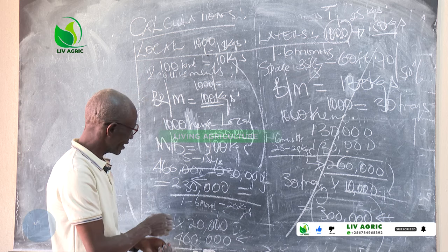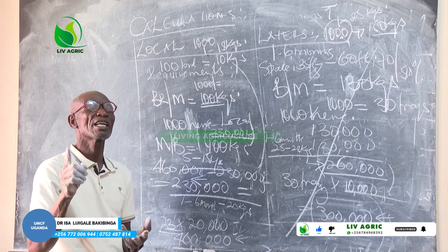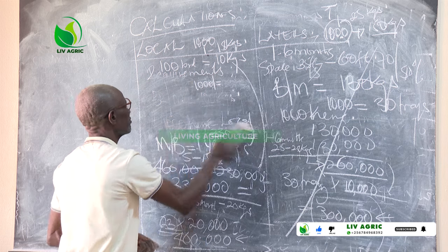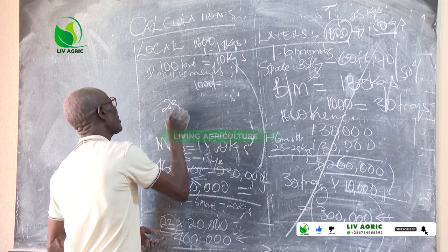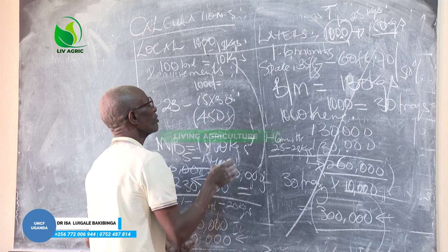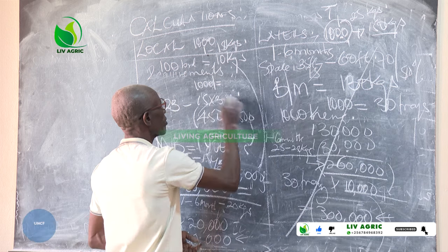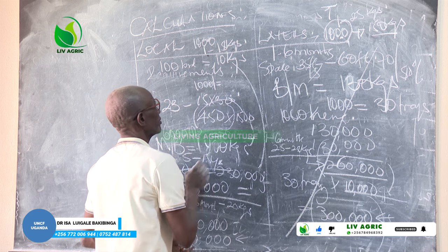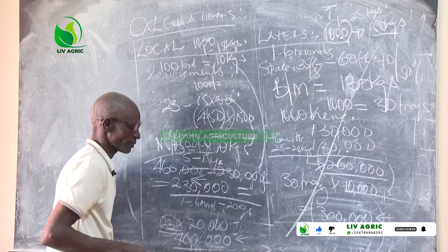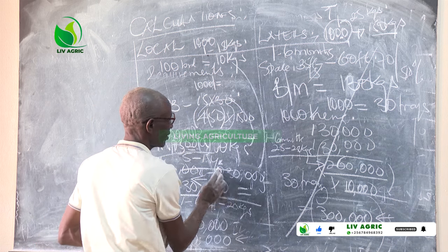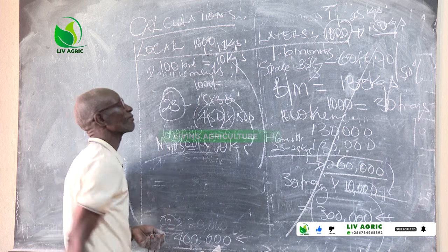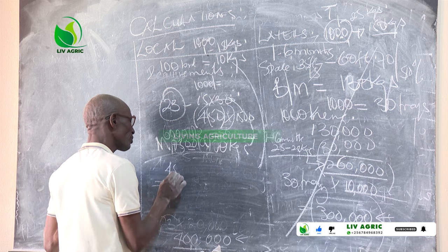What if the 23 trays are put in an incubator? I only need 15 of the 23. 15 times 30 hatch — that's 450 times 30 equals 15. From 23 trays we have managed to hatch 451 one-day-old chicks.